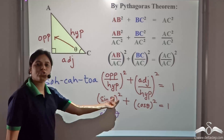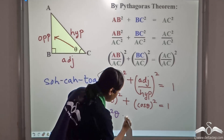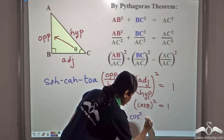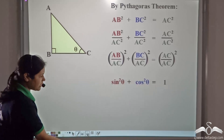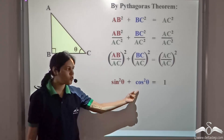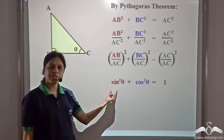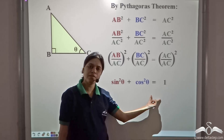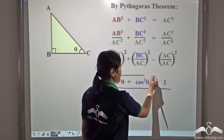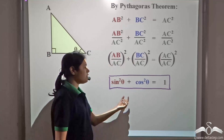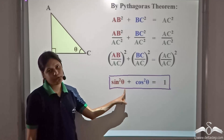So, sin θ whole square is also written as sin²θ. Similarly, cos θ whole square can also be written as cos²θ. So, we get sin²θ plus cos²θ equal to 1. This is an identity. Why is it an identity? Because it holds true for all the values of theta.